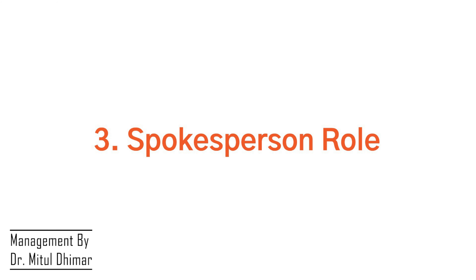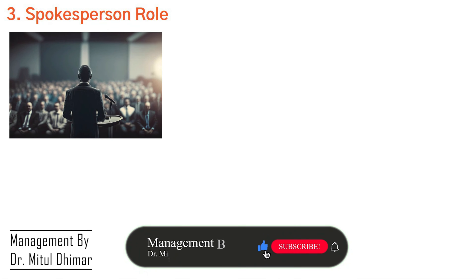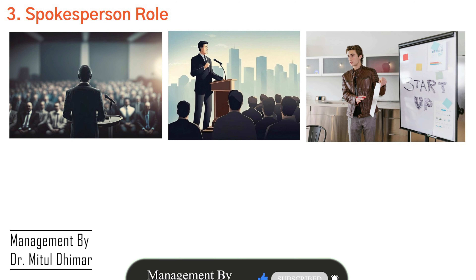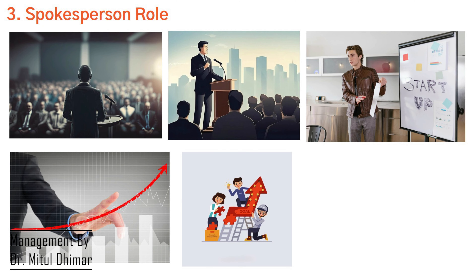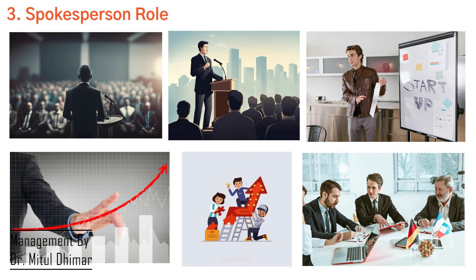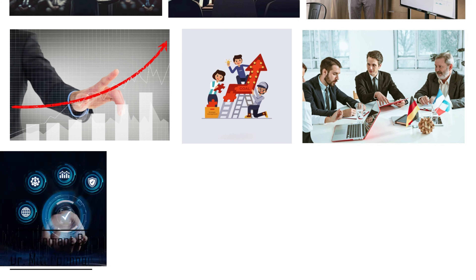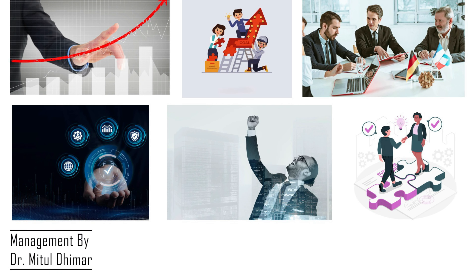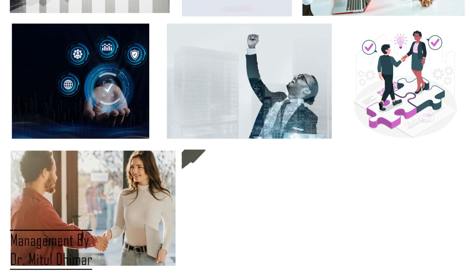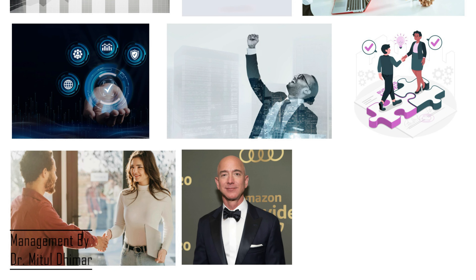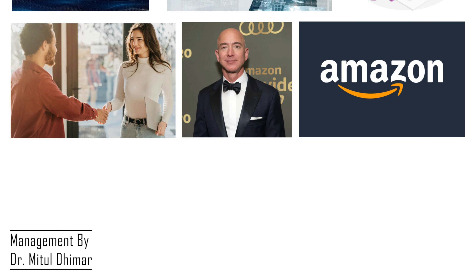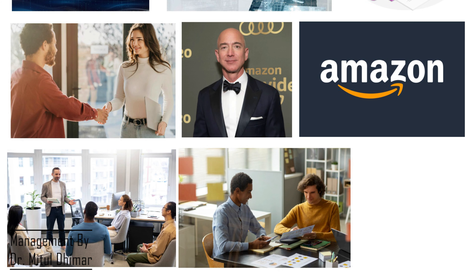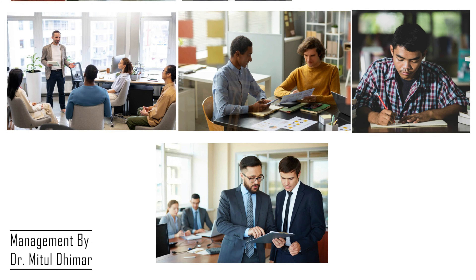Number three: the Spokesperson role. Picture a CEO delivering a keynote speech at an industry conference, representing their company and sharing insights on industry trends and innovations. As a spokesperson, the CEO communicates the company's vision, values, and achievements to external stakeholders such as investors, customers, and the media. An excellent example is Jeff Bezos, the founder and former CEO of Amazon, who often served as the company's spokesperson sharing updates on Amazon's business strategies and future plans with investors and the public.